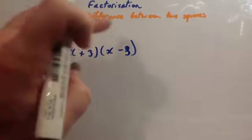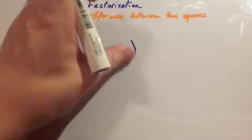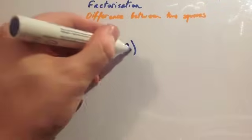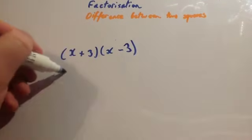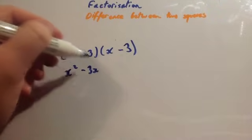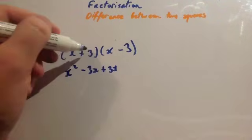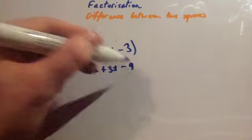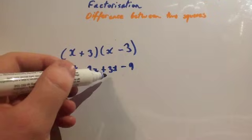Let's just see what would happen if I expanded these. So x times x is x², x times -3 is -3x, 3 times x is +3x, and 3 times -3 is -9.